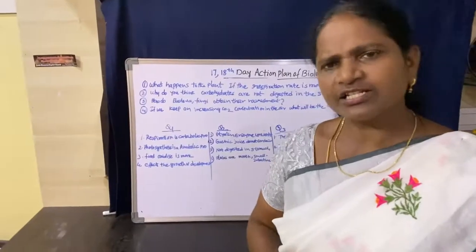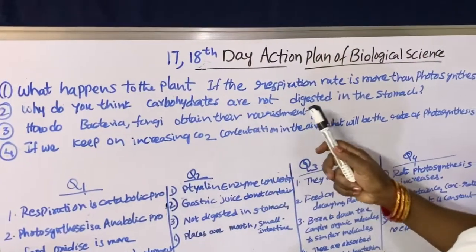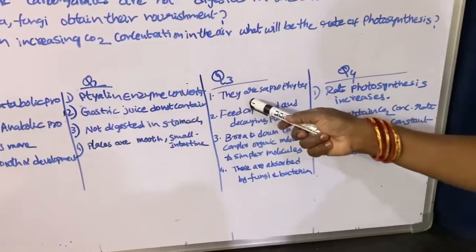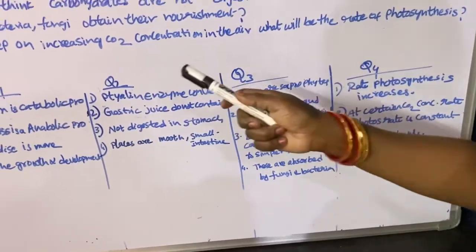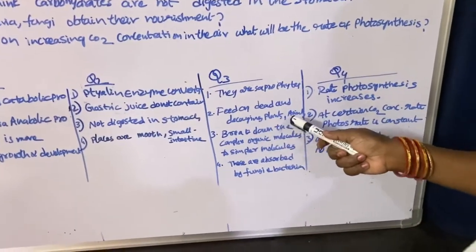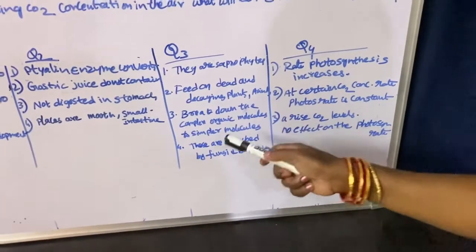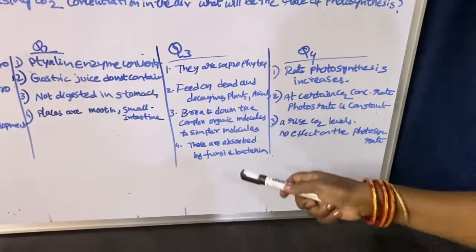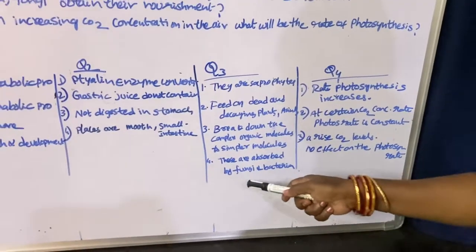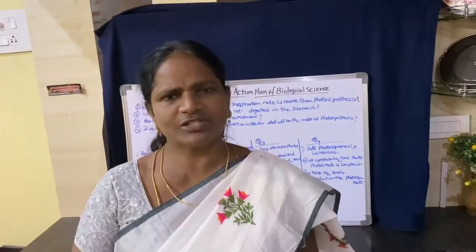Third question: How do bacteria and fungi attain their nourishment? The answer is that they are saprophytes. Bacteria and fungi are saprophytes — they feed on dead and decaying plants and animals. They break down complex organic molecules to simpler molecules, and these are then absorbed by the fungi and bacteria. This is the answer to the third question.